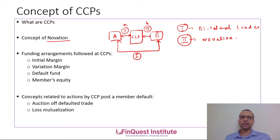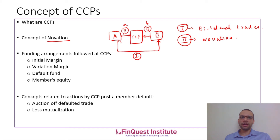CCPs are private organizations, so there is a remote possibility that a CCP itself could default. To prevent this, CCPs maintain funding arrangements to ensure ample funding in case of member defaults. The first arrangement is initial margin: any clearing member entering a CCP-cleared transaction must post a specified initial margin as collateral with the CCP before the trade can flow through.